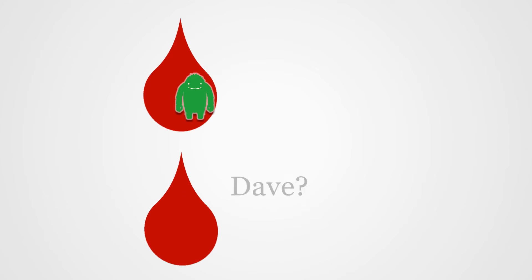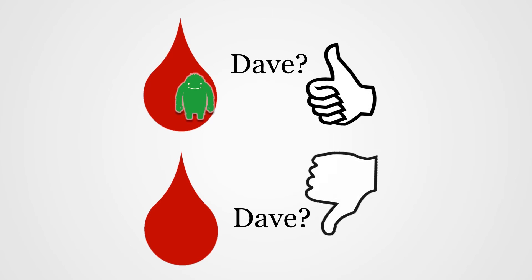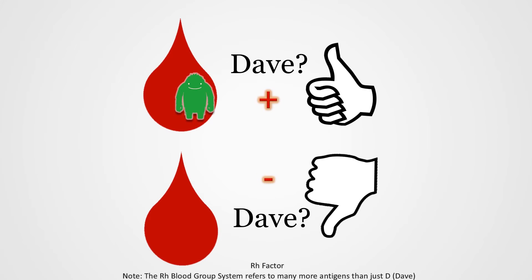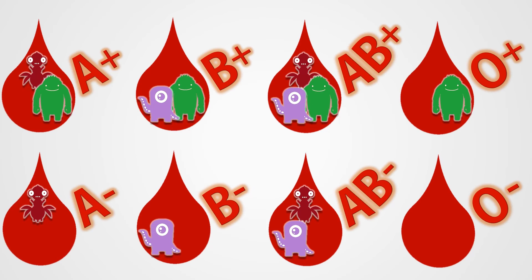For Dave, it's just a quick 'do you have Dave?' — yes or no, one or zero, or because this is a medical thing, positive or negative. Since your body cares if the blood has any of the three, whenever anyone talks about their blood type they squish both the letter and the sign together.